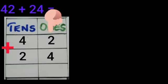Now, let us add the ones first. Which are the numbers in the ones column? Yes, 2 and 4. So 2 plus 4 is same as 6.